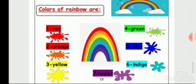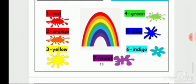Color number two is orange, number four is green, number five is blue. The last two colors are indigo and violet. So Junior One, the colors of the rainbow are seven colors: red, orange, yellow, green, blue, indigo, and violet.